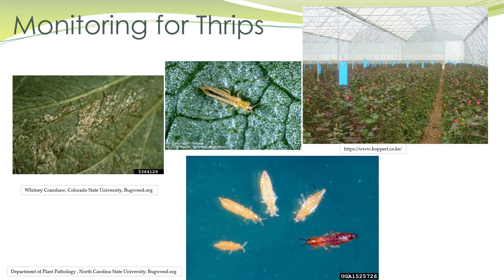The best way to monitor for thrips is with blue sticky cards. You can use yellow, but blue is better for thrips. You do want to be careful about wearing light-colored clothing, especially white, yellow, or blue, because thrips are attracted to those colors. They may land on your clothing and you can spread them to other plants.